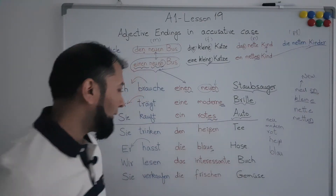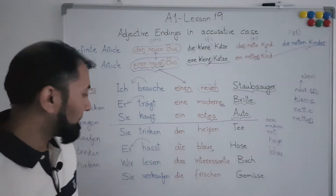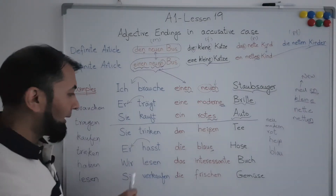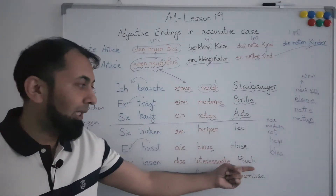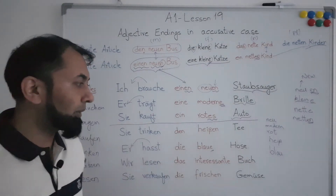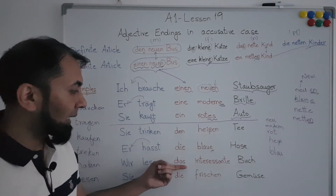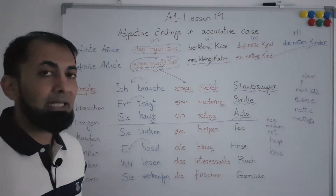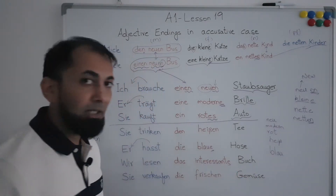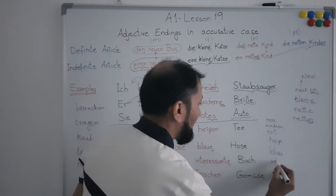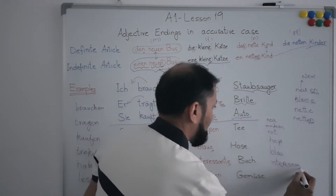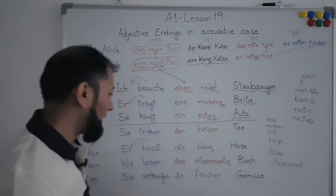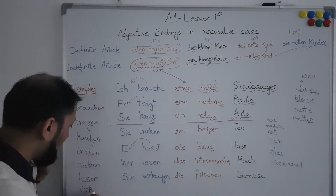Next example: 'Wir lesen das interessante Buch' — we read the interesting book. 'Lesen' is a German verb meaning 'to read'; for 'wir' it remains 'lesen'. 'Buch', meaning 'book', is a neuter noun, so it has the definite article 'das'. Since we are using a definite article with a neuter noun in the accusative, we refer to that section of the table, which says we add '-e' at the end. So 'interessant' becomes 'interessante'.